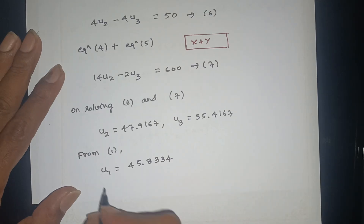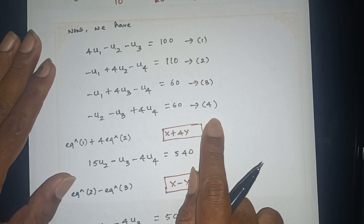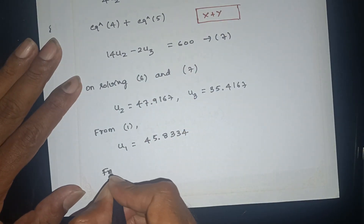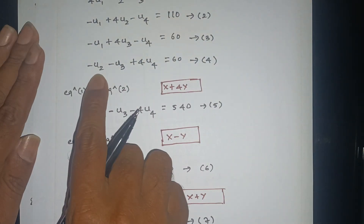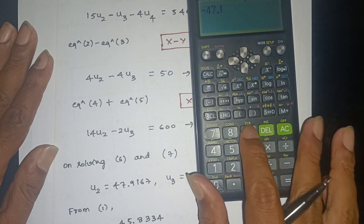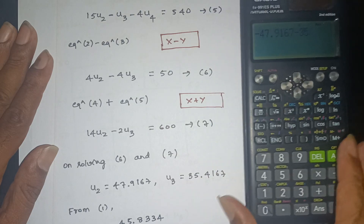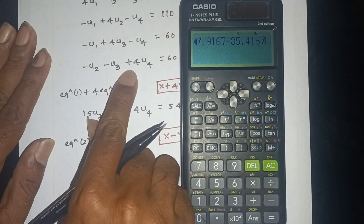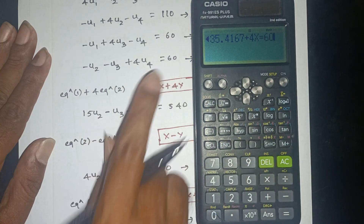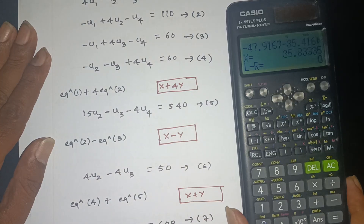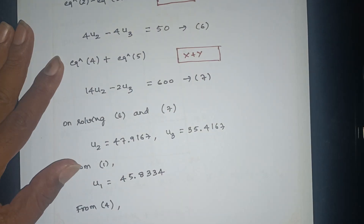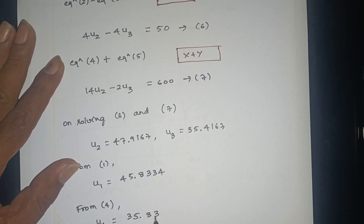The decimal values are fixed to 4 decimal places. Now find u4 using the known values of u1, u2, u3. From equation 4: 10 minus u2 (47.9167), minus u3 (35.4167), plus 4 into u4. Calculate: right side is 60. Therefore u4 is 35.8334.